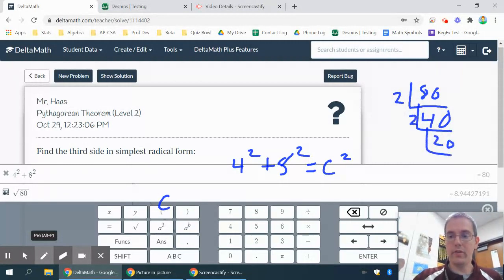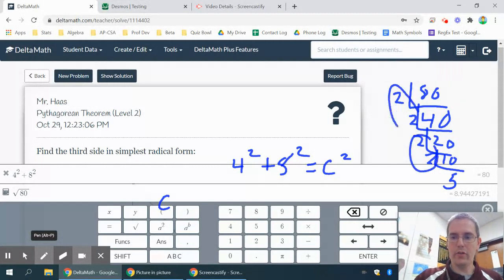I can take out yet another 2. Wow, seems to be a lot of 2s coming out of 80. So that's two pairs of 2s and a 5.